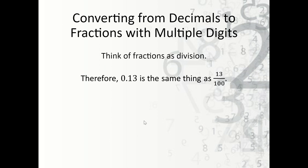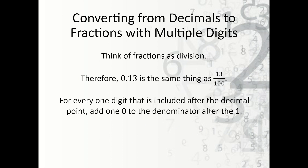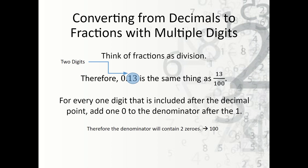For example, 0.13 is the same thing as 13 over 100. For every number after the decimal point, we include that many zeros. In this case there are two digits, so our denominator will contain two zeros after the one — one zero zero, which is one hundred. Then we place this value over the top: 13 over 100.